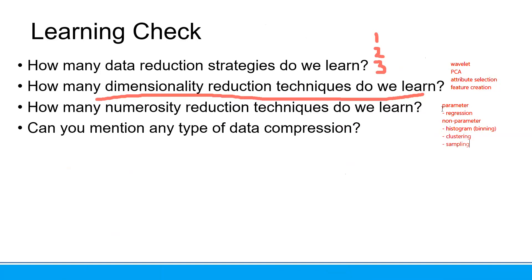Can you mention any type of data compression? We can have data compression for string. We can have data compression for audio or video. We can have data compression for time-related data. And the types can be lossy or lossless. If it is lossy, you cannot get the real original data. For lossless, you can get the original data back.